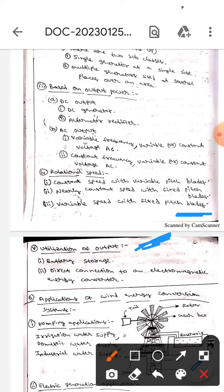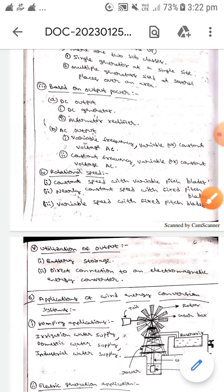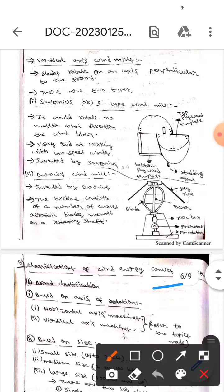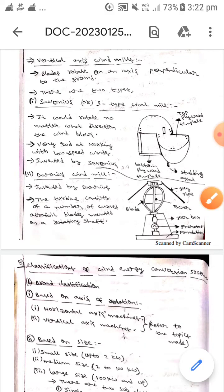The next is utilization of output. There are two types: battery storage and direct connection to an electromagnetic energy converter. This is all about the classification of wind energy conversion systems. I hope you understand. Thank you.